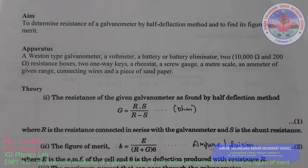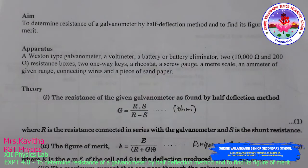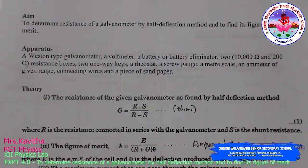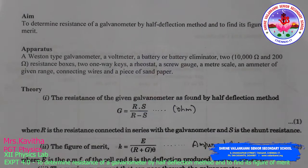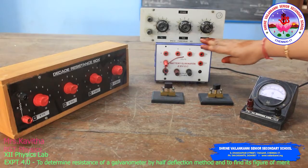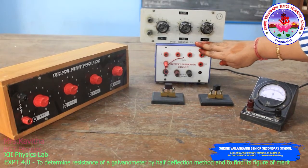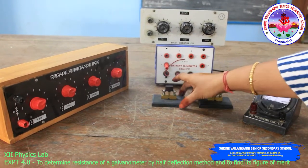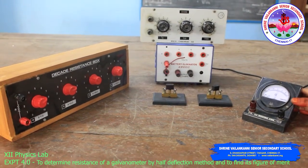Good day all. Aim: to determine the resistance of a galvanometer by half deflection method and to find its figure of merit.